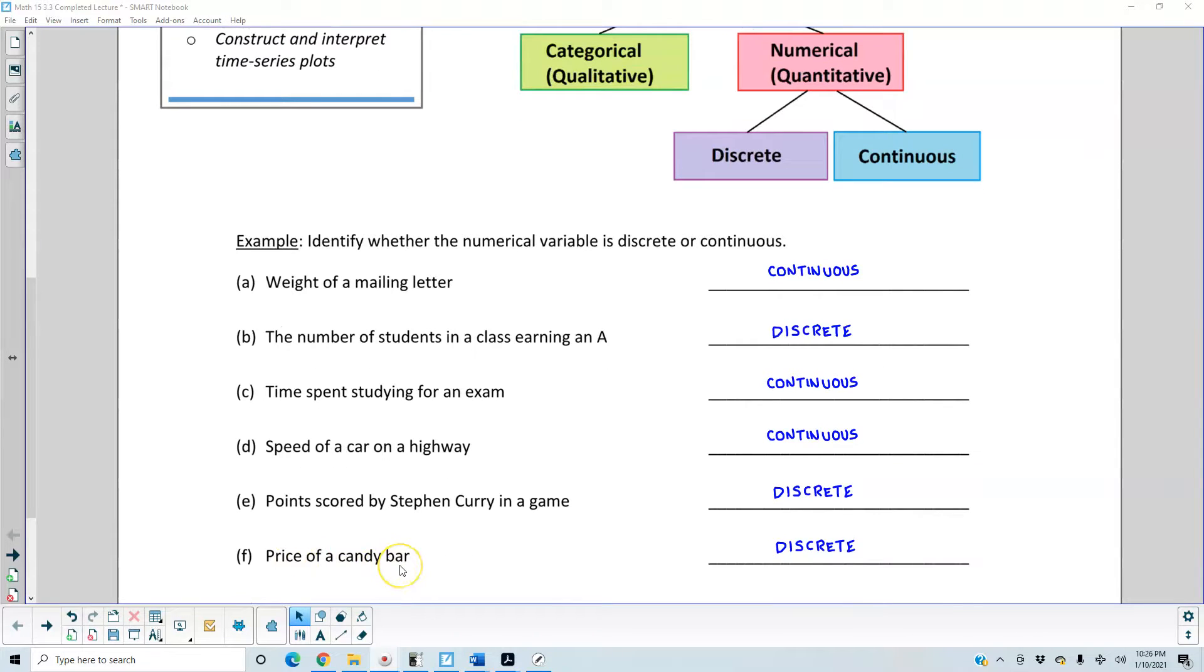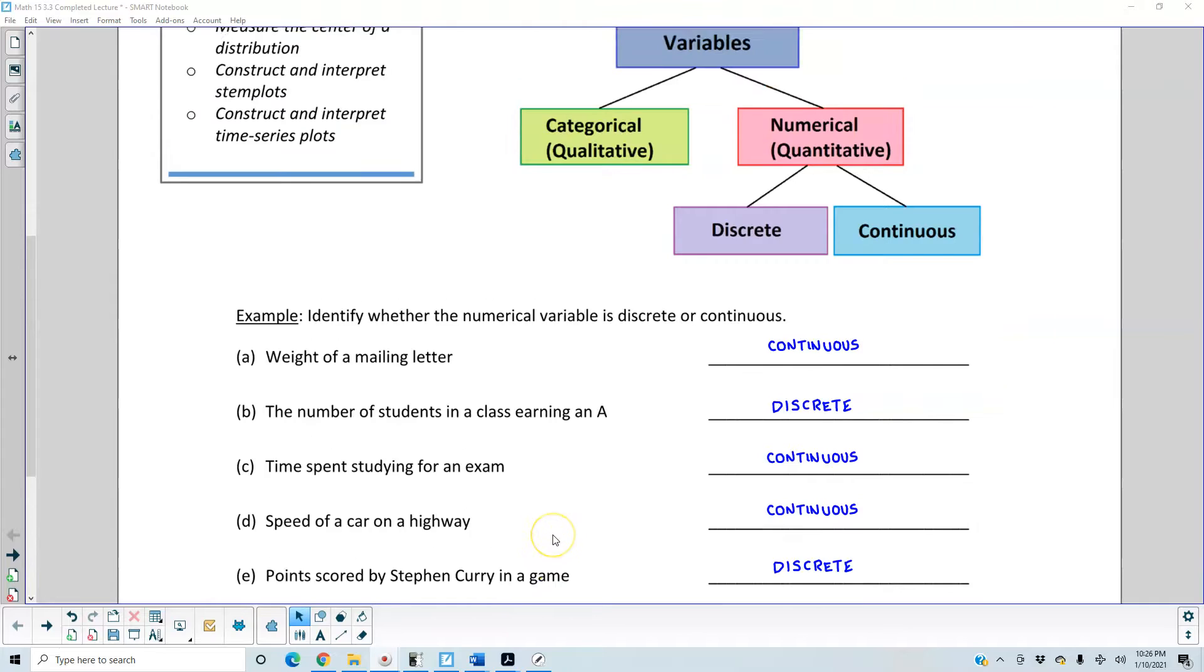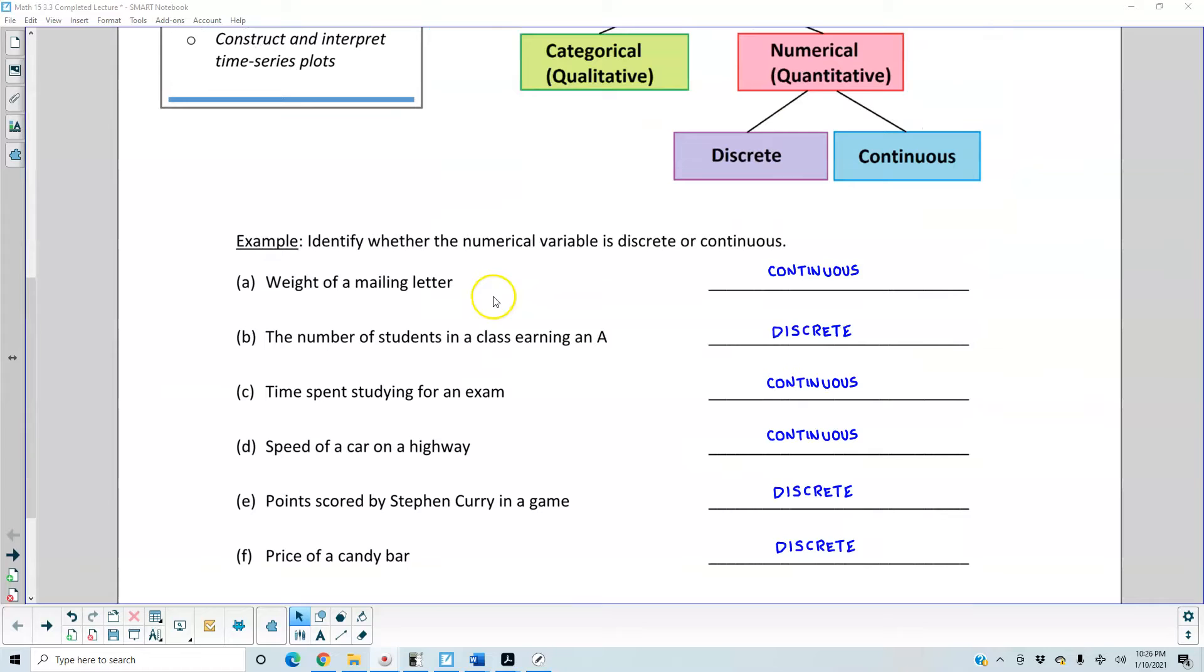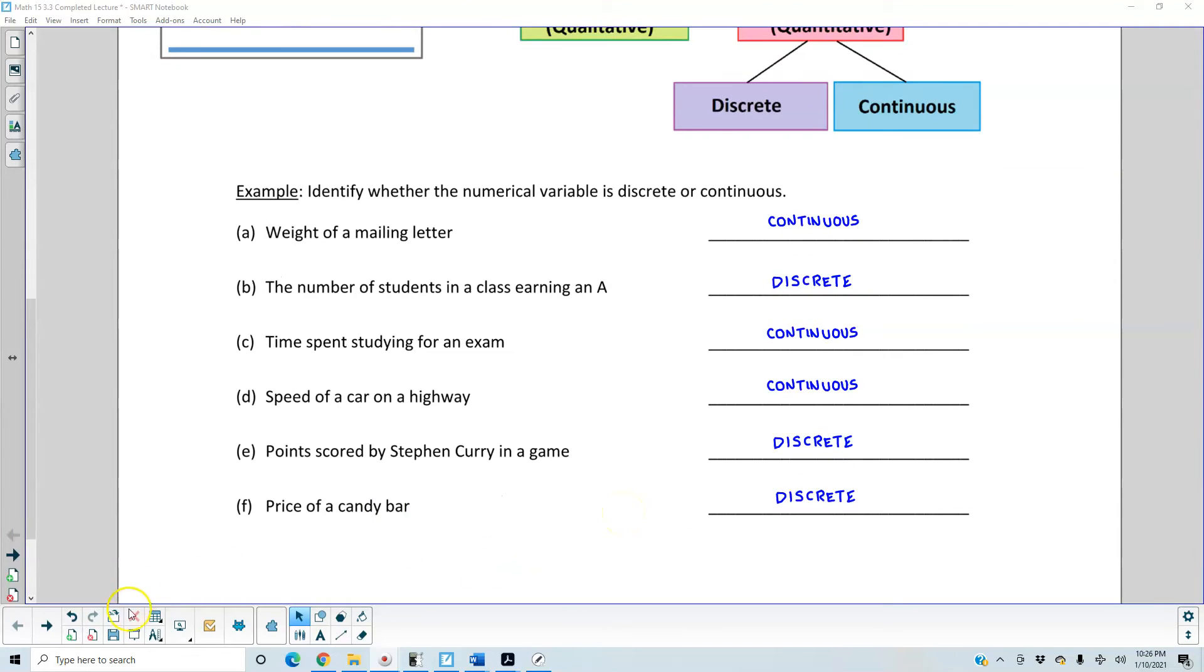The price of a candy bar is discrete. It's discrete because you assume that the values can be counted, or it has a finite number of possible values. This is a finite price of that candy bar, so therefore it is discrete.